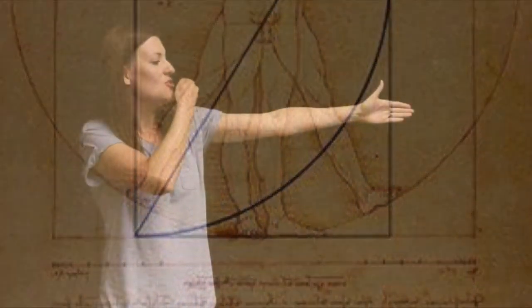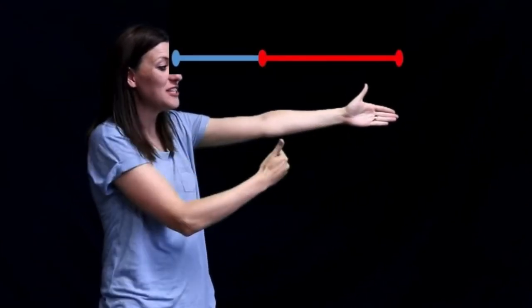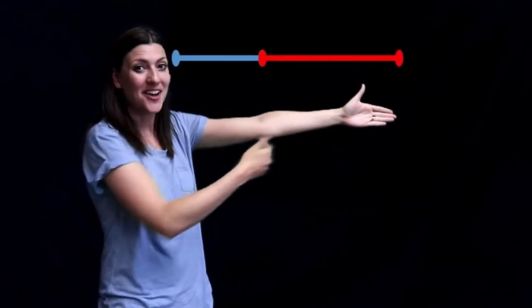For example, look at the 1 to 1.6 ratio of the human arm. The divisions from the shoulder to the elbow and the elbow to the end of the tips of the finger is a perfect 1 to 1.6 ratio.